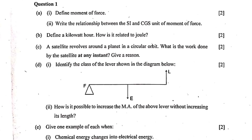Question 1c: A satellite revolves around a planet in a circular orbit. What is the work done by the satellite at any instant? The answer is zero — no work is done. The reason: the centripetal force (gravity of the planet on the satellite) is directed towards the center, and displacement is perpendicular (90°) to the force. W = F·s·cos90° = zero because cos 90° is zero.